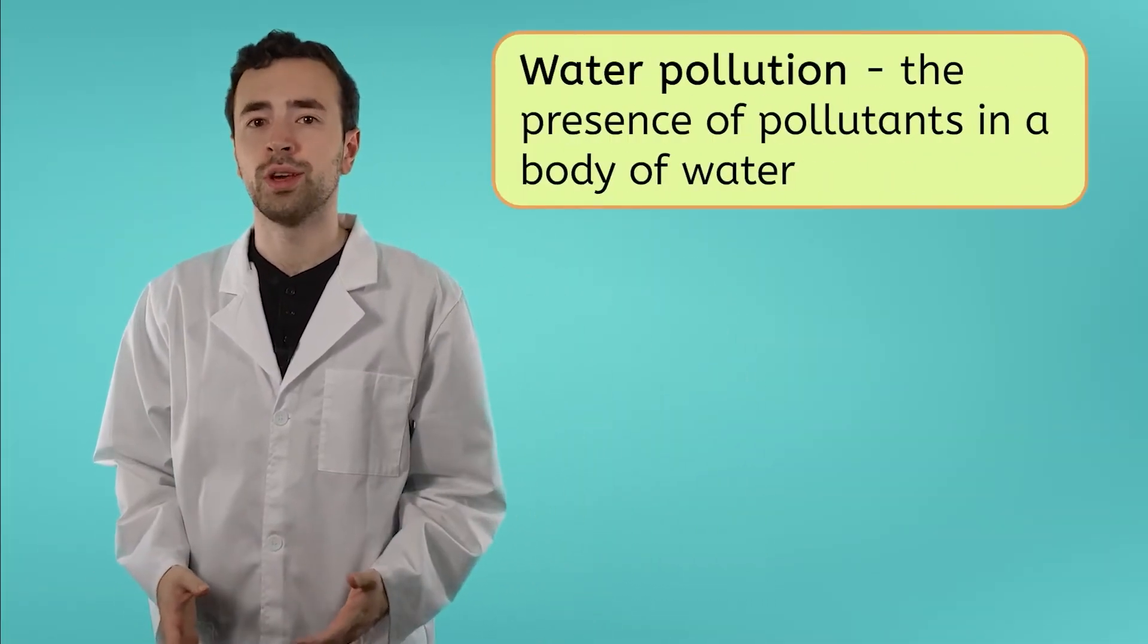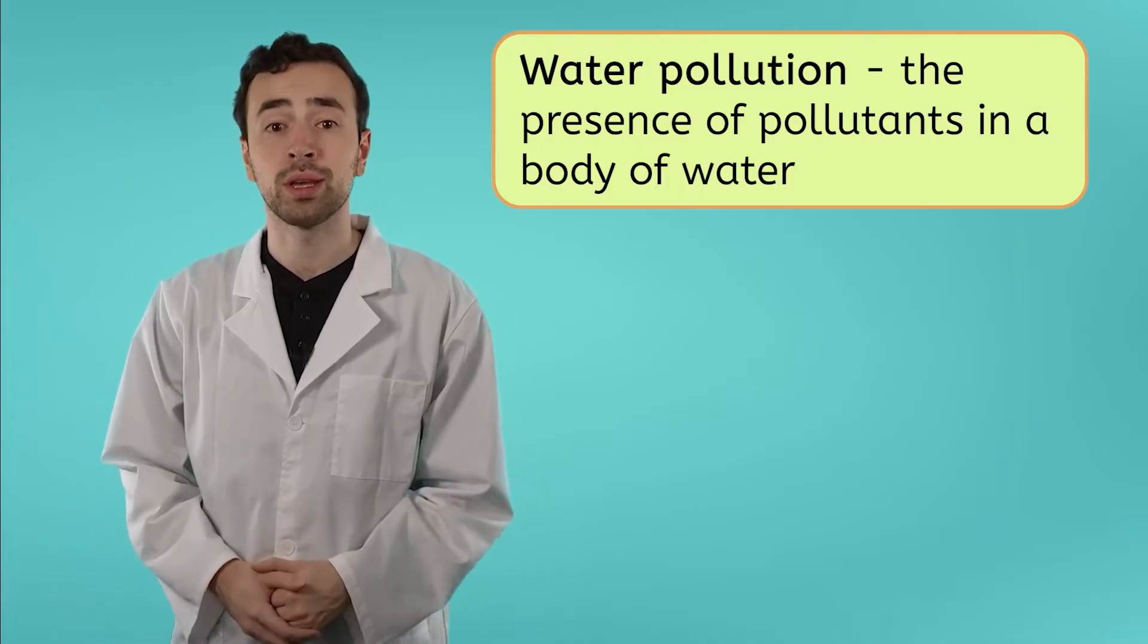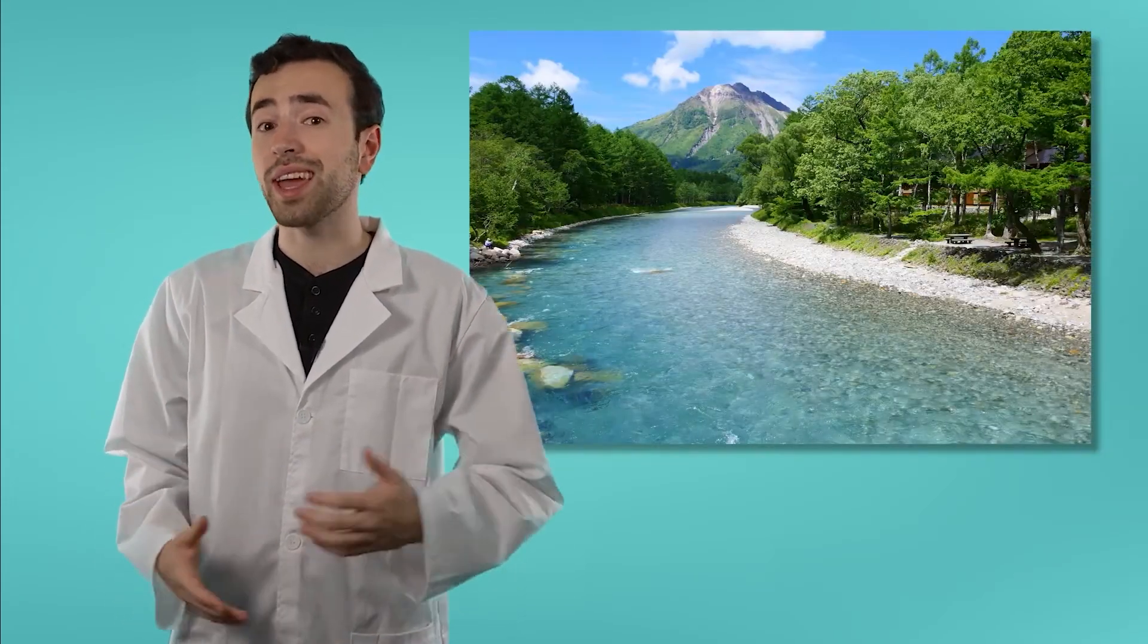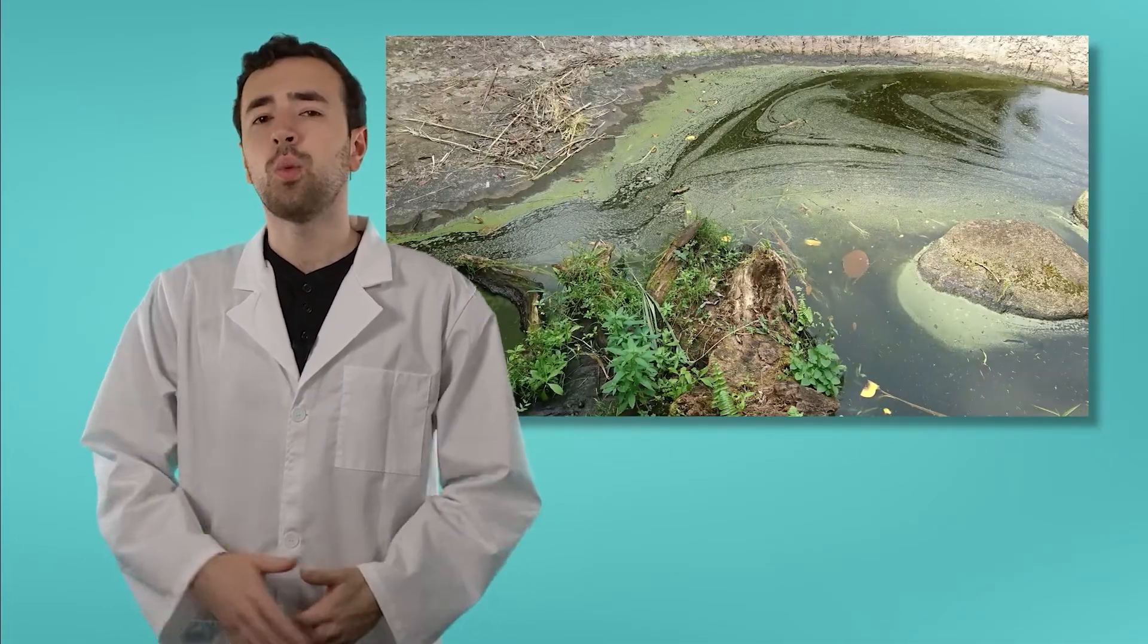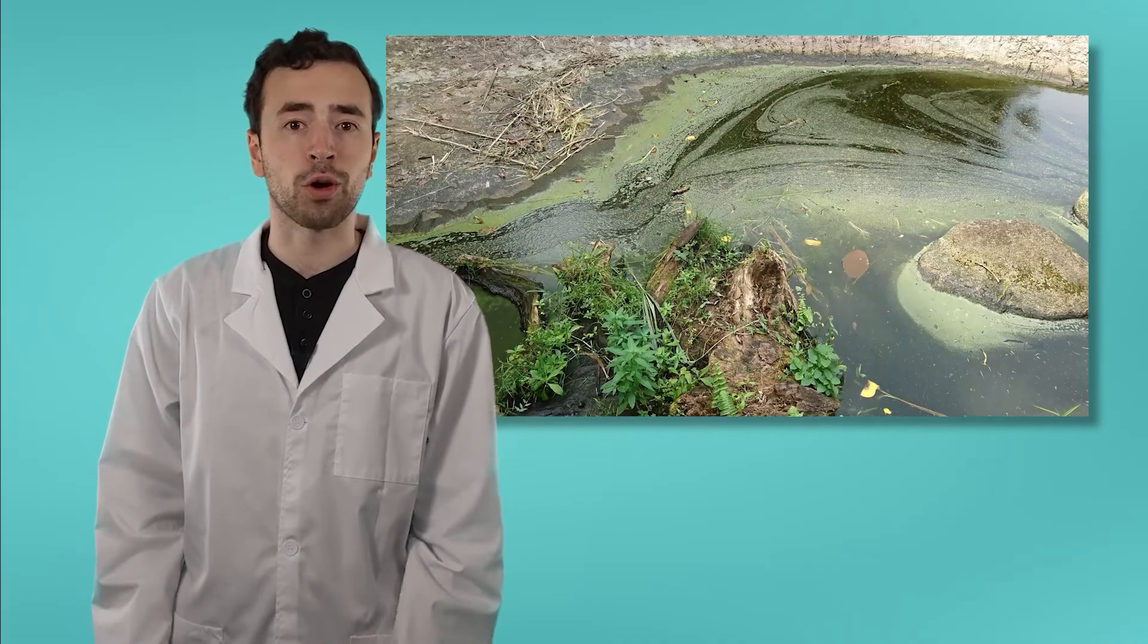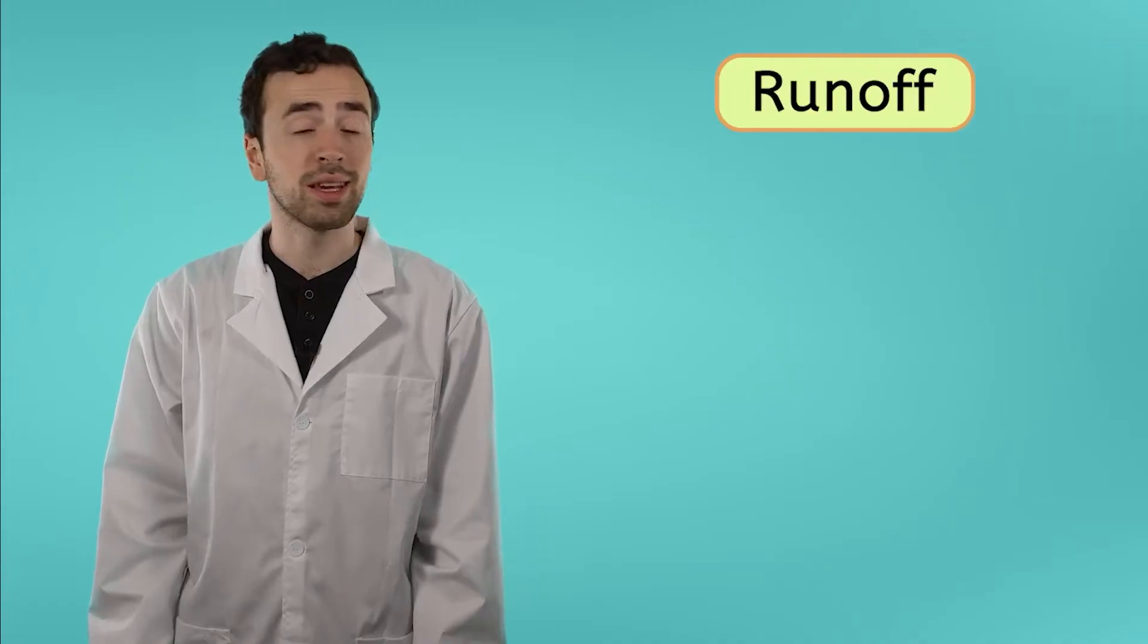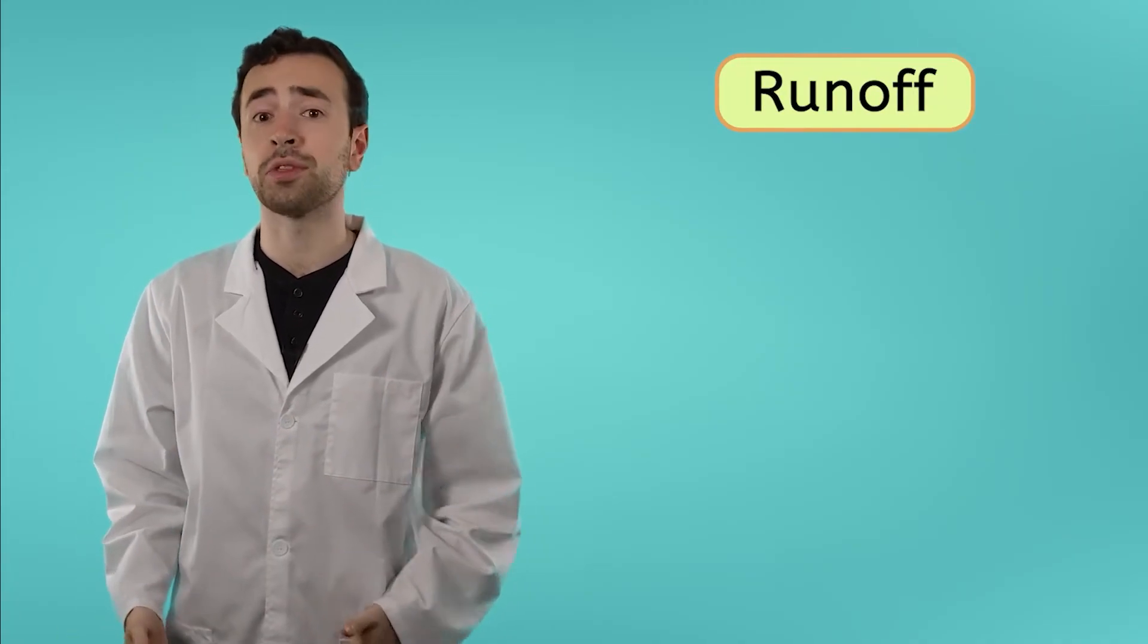Another type of pollution of global concern is water pollution, which is when any body of water, from freshwater streams to the ocean, is polluted. Some polluted water can look murky with visible pollutants like garbage, but polluted water can also look clean, depending on the type of pollutants in the water. Often, water pollution begins on land. When it rains, the water carries loose soil, chemicals from farms and lawns like fertilizers, and even trash into rivers, lakes, and oceans. This is called runoff. Chemicals in runoff can be extremely harmful to the health of aquatic ecosystems.